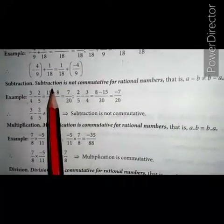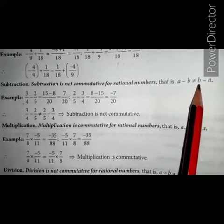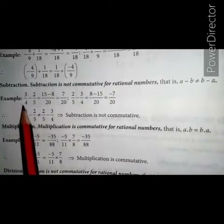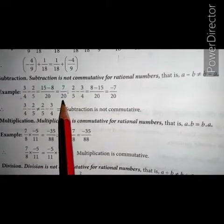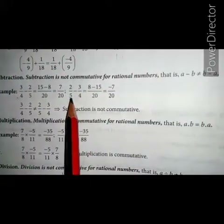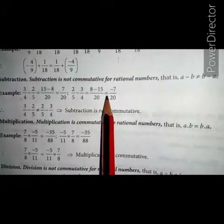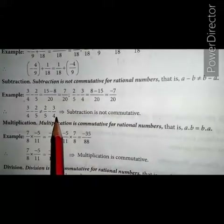Next, subtraction: subtraction is not commutative for rational numbers. That is, a minus b is not equal to b minus a. For example, let a equals to 3 upon 4 and b equals to 2 upon 5. So a minus b means 3 upon 4 minus 2 upon 5, we get 7 upon 20. And on interchanging their places, b minus a means 2 upon 5 minus 3 upon 4 equals to minus 7 upon 20. They are not equal, so a minus b is not equal to b minus a. Thus, subtraction is not commutative.